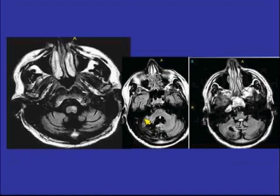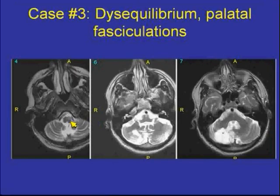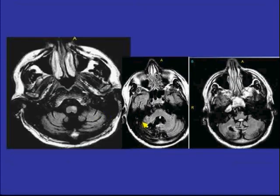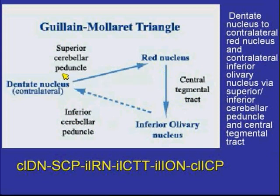What one sees here is the high signal intensity in the medullary olive with enlargement of the olive, which may be better seen on the T2-weighted scan. This is due to injury of the dentate nucleus. Looking at the Guillain-Molaret triangle, there are connections between the red nucleus, the inferior olivary nucleus, and the dentate nucleus, mediated through the ipsilateral central tegmental tract and then across via the contralateral superior or inferior cerebellar peduncles.